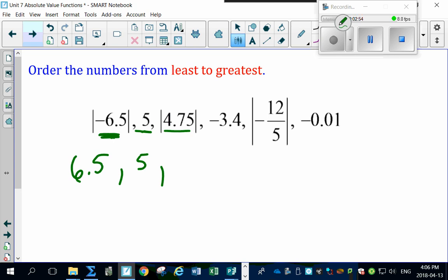Here's Absolute Value of 4.75. Well, guess what? That's 4.75. This doesn't have an Absolute Value with it, so it still stays as negative 3.4.